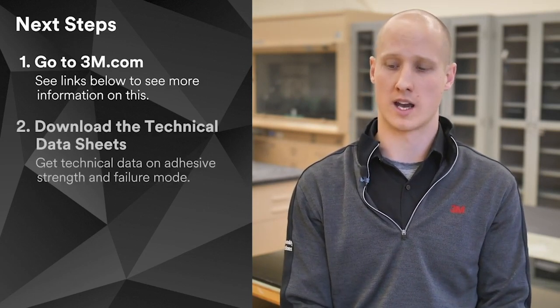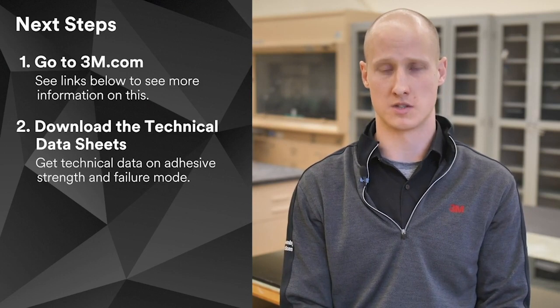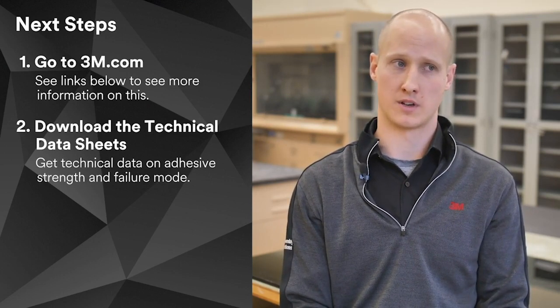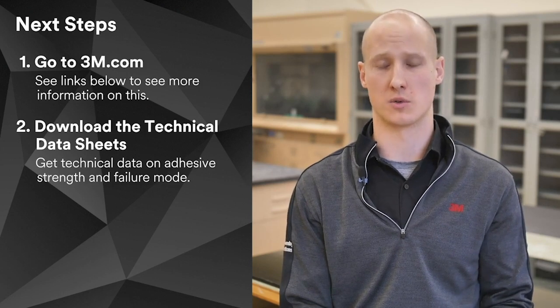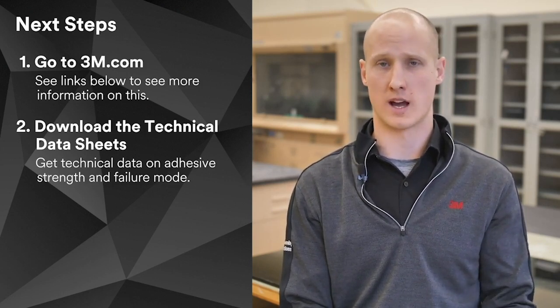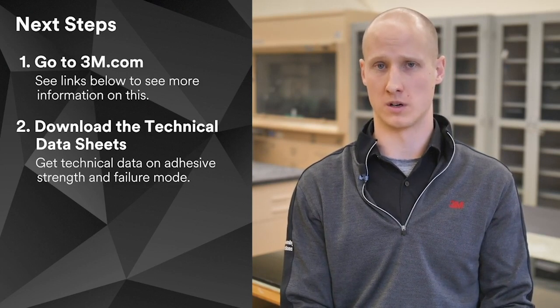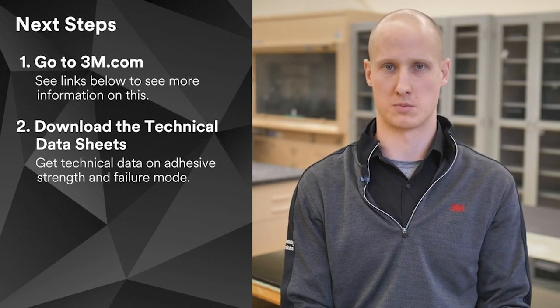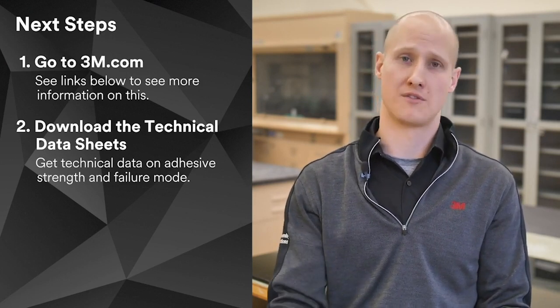The second thing I would suggest is to look at technical data pages of the adhesives that you're looking at because those tech data pages will have adhesion to a lot of different substrates and they'll report two things. So you'll typically see a number. So it's either an overlap shear number or a peel number showing the overall strength in pounds per square inch, megapascals, or pounds per inch in peel.